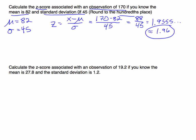Here's the second example. We have an observation of 19.2. I have a mean of 27.8 and a standard deviation of 1.2. So let's just write this down. My observation is 19.2.